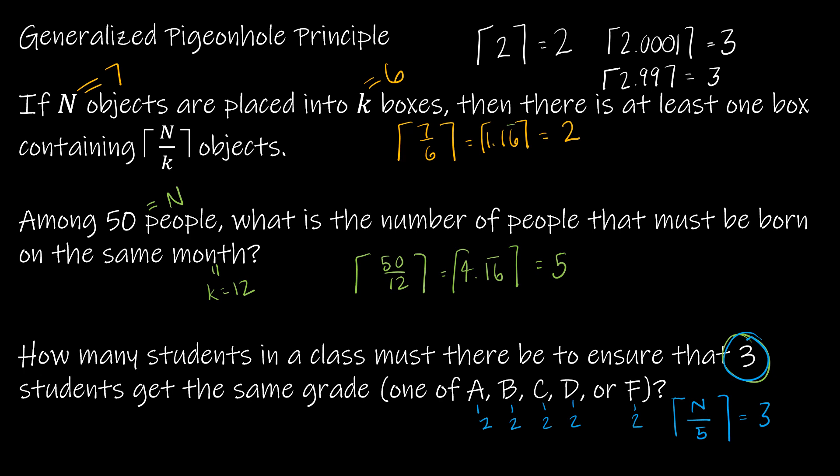Can I ensure then that there are three students that get the same grade with 10? No, but by the pigeonhole principle, if I add one more to that, which is 11, now I can ensure that three students get the same grade because that last student needs to go in one of the boxes that already has two people in it. So 11 is the correct answer. So now the question becomes, how do I solve that mathematically?